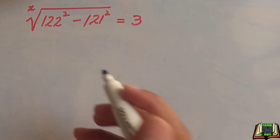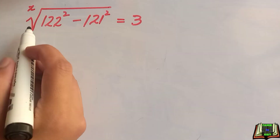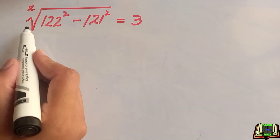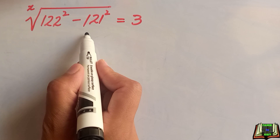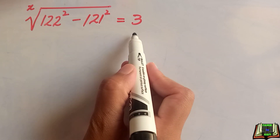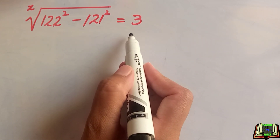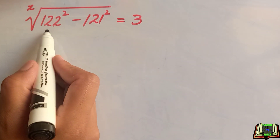Welcome back. If x root of 122 squared minus 121 squared is equal to 3, let's solve for x in this radical question.